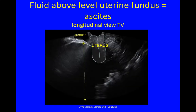This is a longitudinal view of the pelvis seen transvaginally. There's bladder here, uterus here, pouch of Douglas here. When the fluid in the pelvis extends beyond the level of the uterine fundus, it is now ascites.